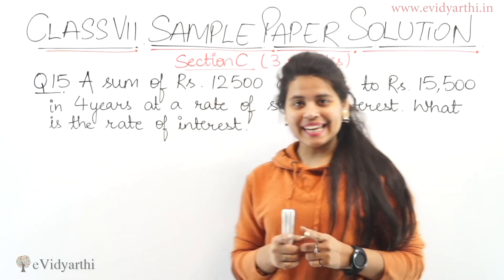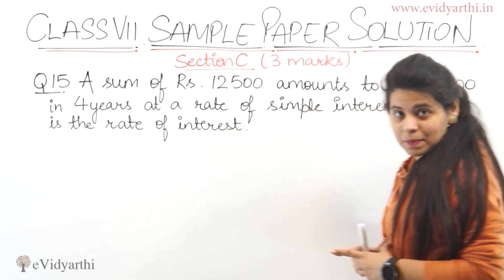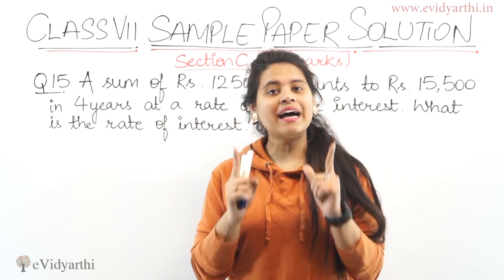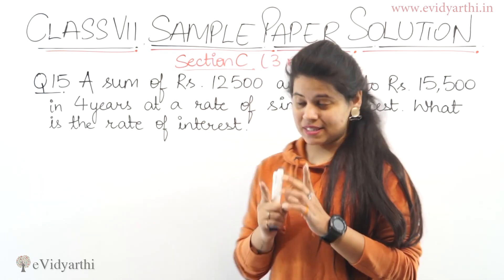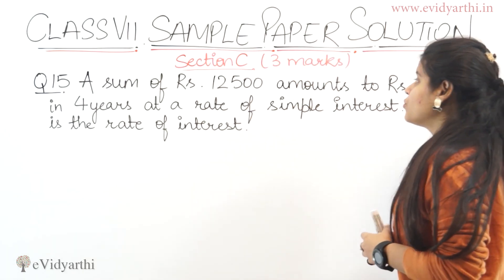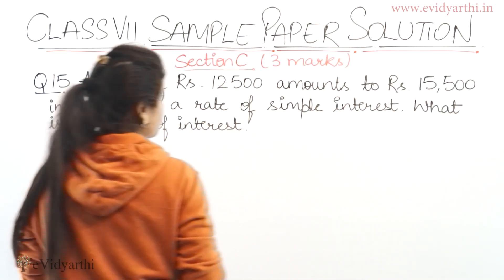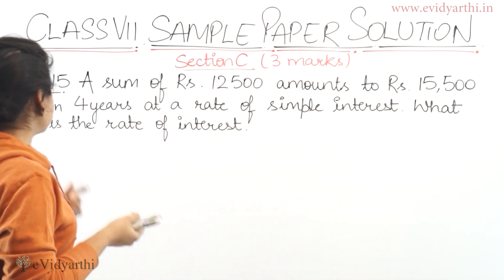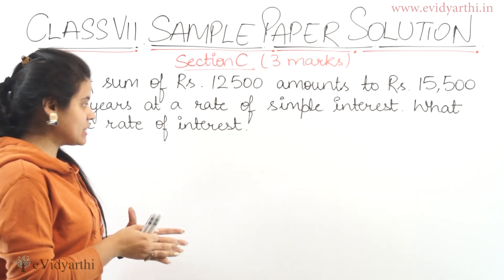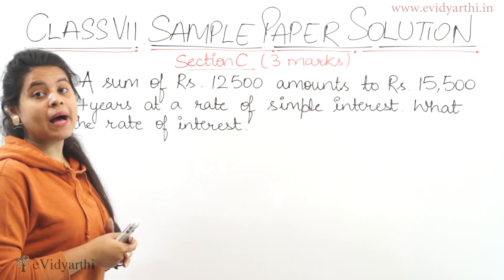Coming to the next question — I am in section C now, which has three marks each. The question says: a sum of rupees 12,500 amounts to rupees 15,500 in four years at a rate of simple interest. What is the rate of interest?